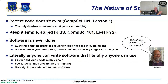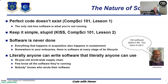Moving on to more about software. I remember day one of Computer Science 101, 44 years ago — the professor's first lesson was: perfect code doesn't exist. Even Hello World relies on a lot of software you didn't write; there's too much software there to prove it's correct. The takeaway: the only risk-free software is what you're not running. Automating information processing with software involves taking on some level of risk. Lesson number two was keep it simple, stupid — keep your attack surface small, keep the code size small, something you can manage.